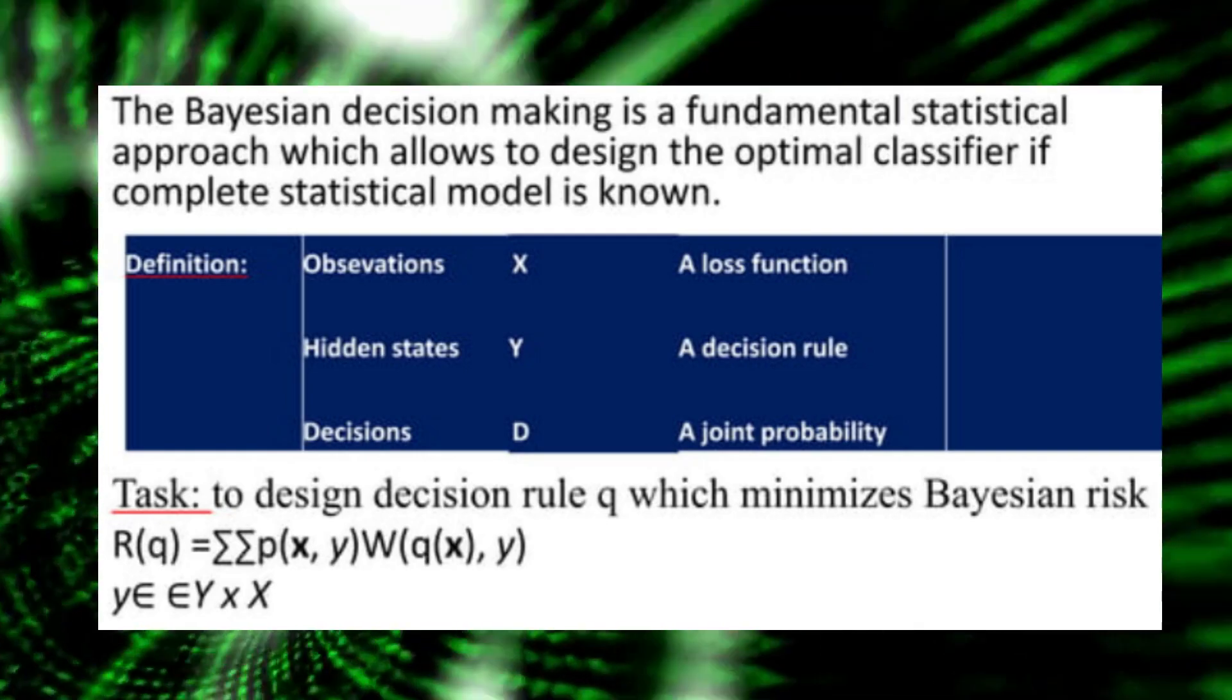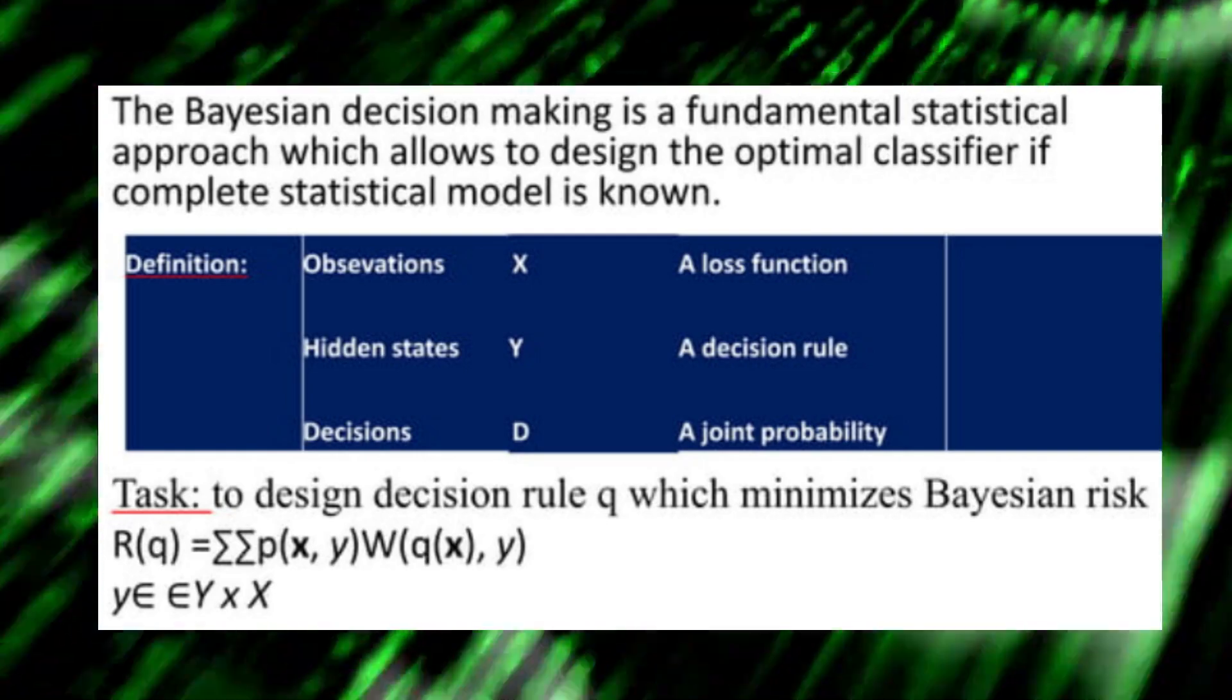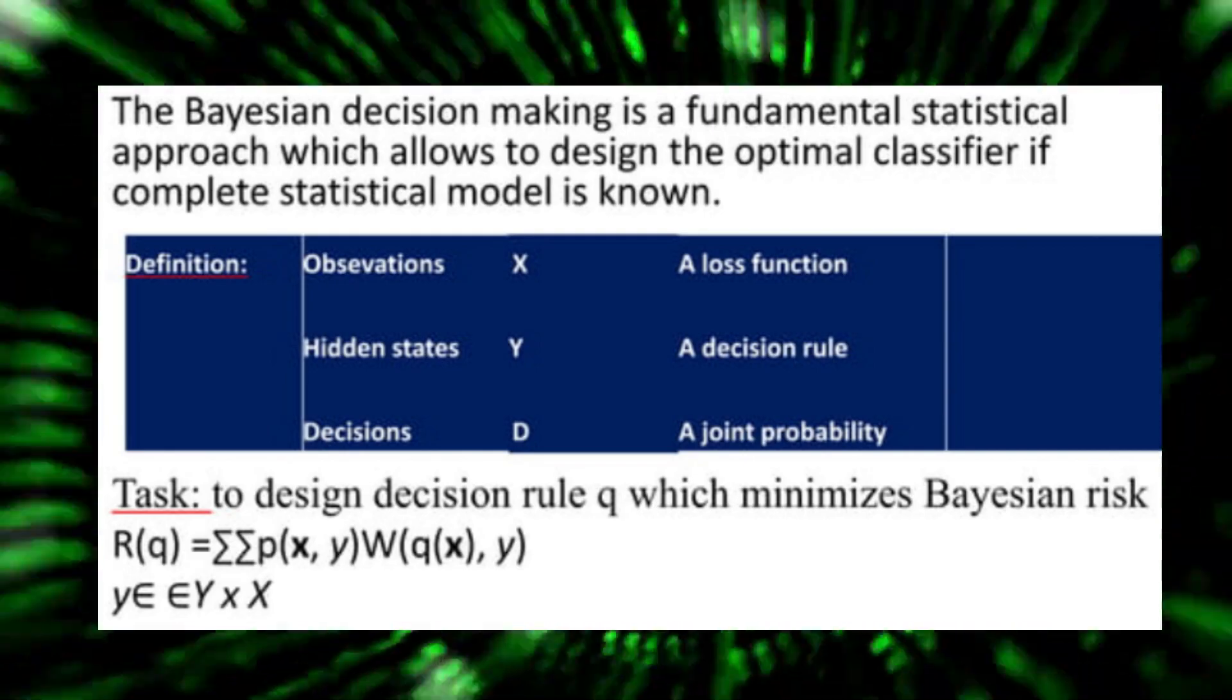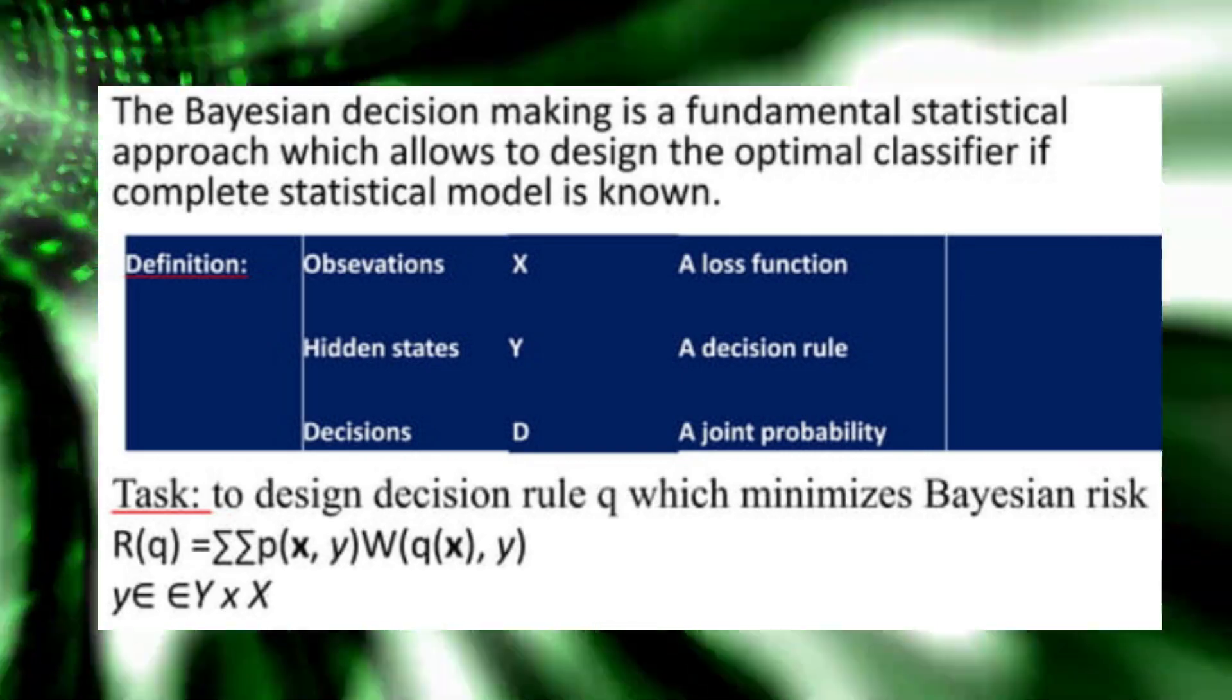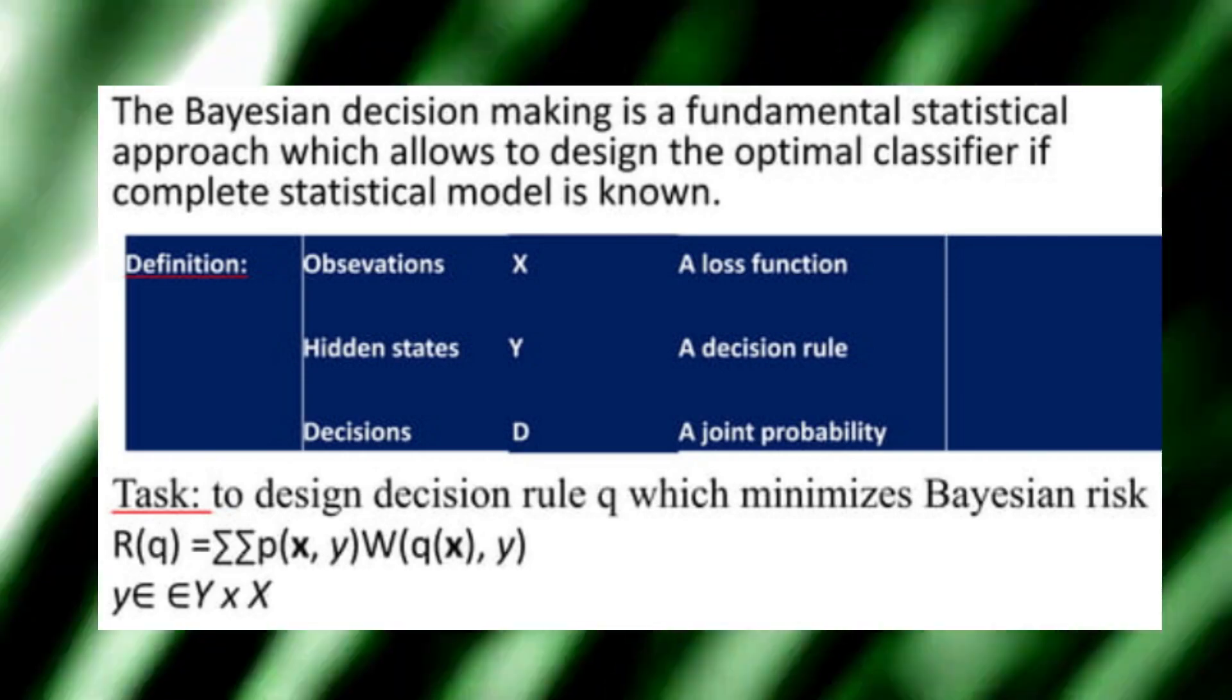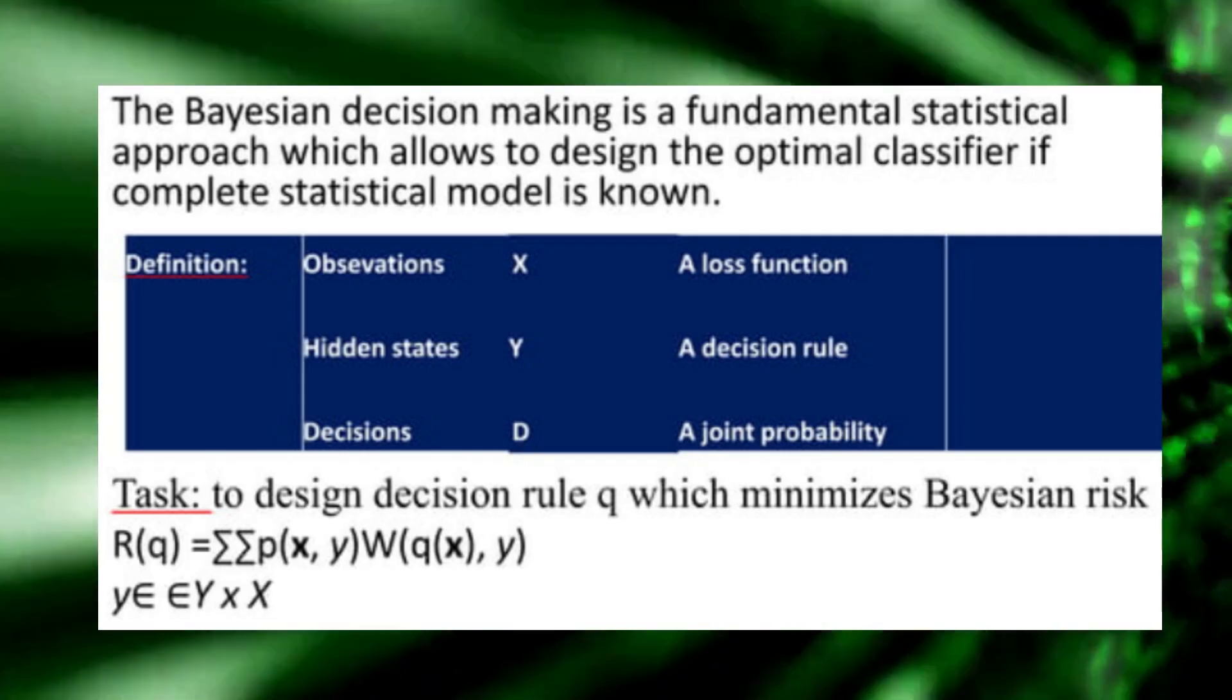Bayesian Decision Theory is a framework that uses probability distributions and decision criteria to make decisions. It combines prior knowledge, prior probabilities of classes, with evidence from the data, likelihood, to calculate the posterior probabilities of classes and then makes decisions based on these probabilities. A decision rule specifies how to make decisions based on the posterior probabilities. Common decision rules include...